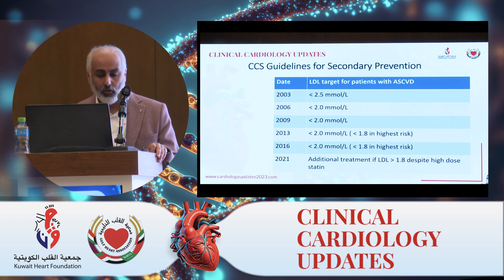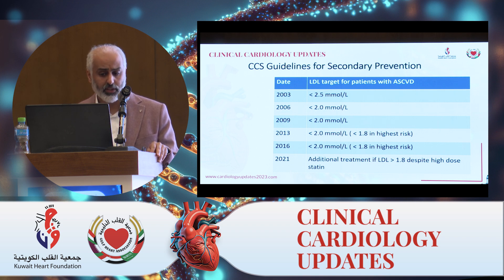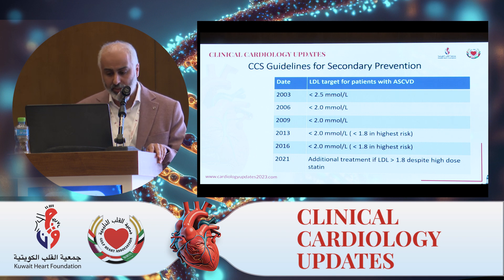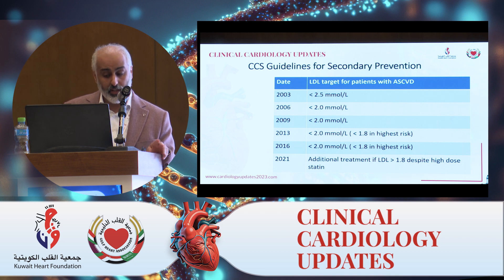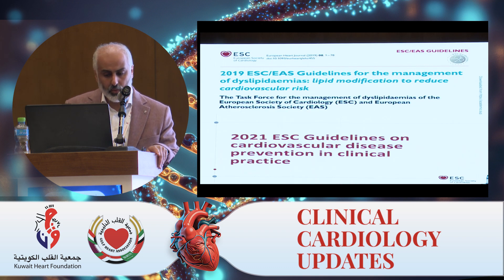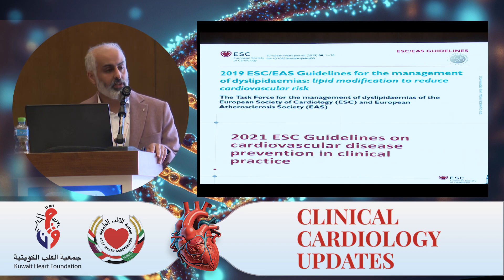Looking at the targets — over the years, the target has been consistently decreased. This is very obvious if you look at the Canadian Cardiac Society guidelines for secondary prevention. They started with a target of less than 2.5 mmol/L in 2003, then reduced to less than 2.0. In 2013, they introduced a high-risk patient group with a target of less than 1.8, and the latest update in 2021 advocated additional treatment to get the LDL down if it's still above 1.8 despite high-dose statin.